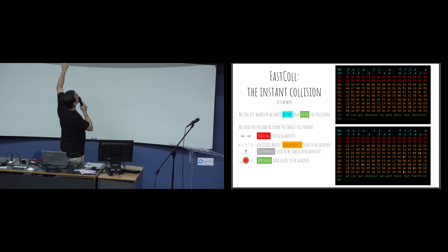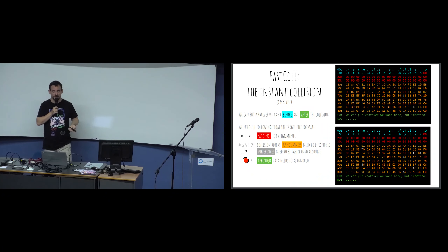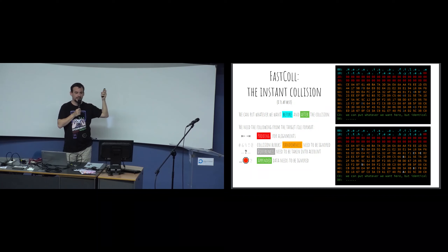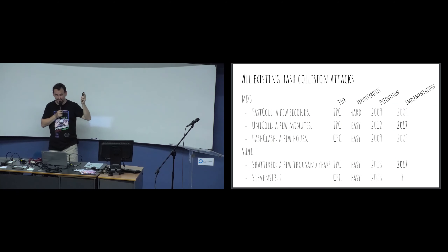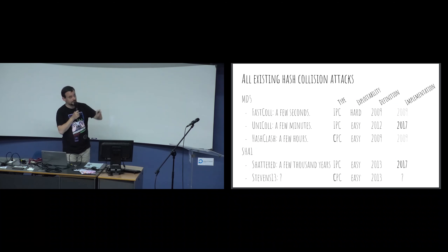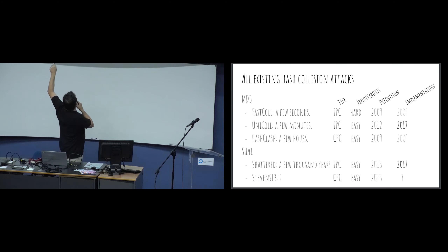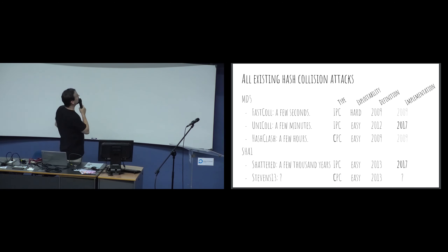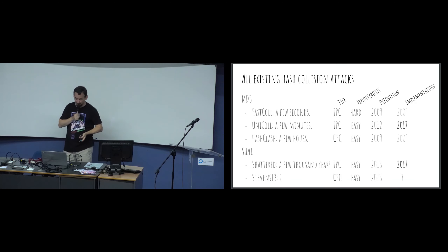It's not because it's instant that it's exploitable. The fastest collision - a few seconds - is hard to exploit, while Shattered is easy to exploit but takes around 6,000 years of core computing.